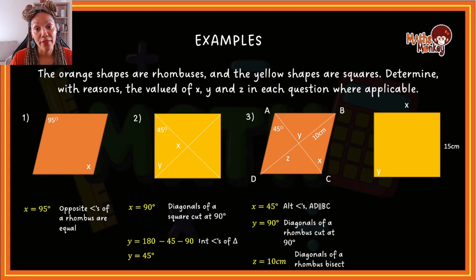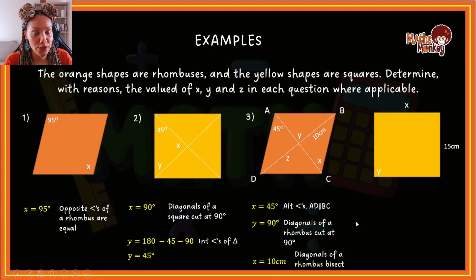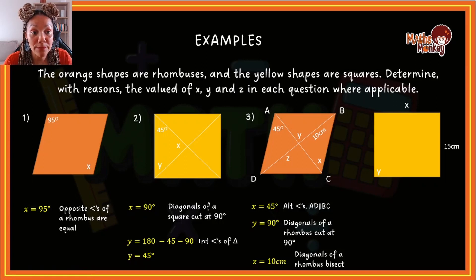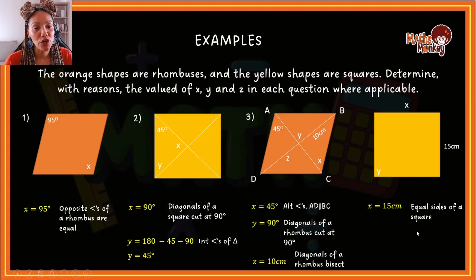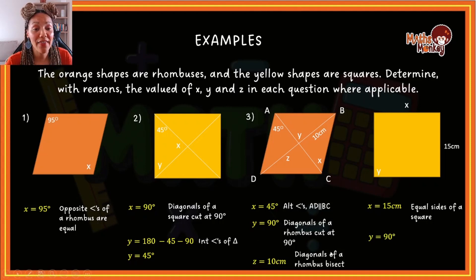Do you see how you are using the properties of these shapes to actually answer questions? Let's look at the next one — this is a square and they want us to find x and y. x refers to the length of a side, so x is obviously 15 because all the sides of a square are equal. If one side is 15, this side also has to be 15. So x equals 15 centimeters. Reason: equal sides of a square. Then for y, this is a square so all angles are 90 degrees, meaning y equals 90 degrees.